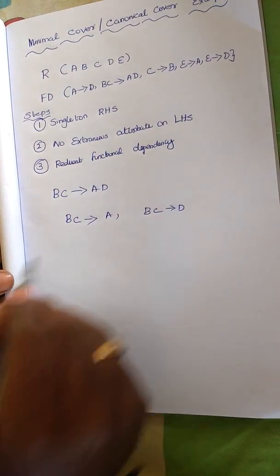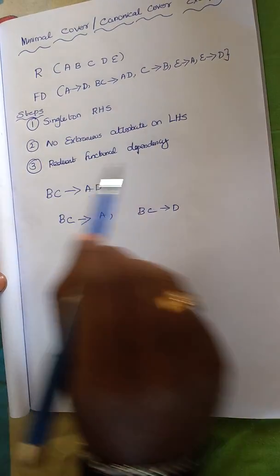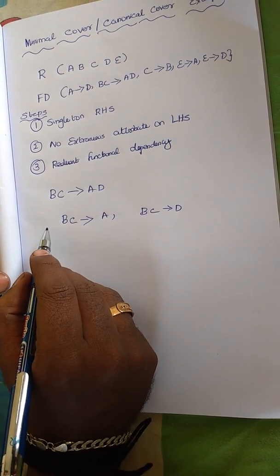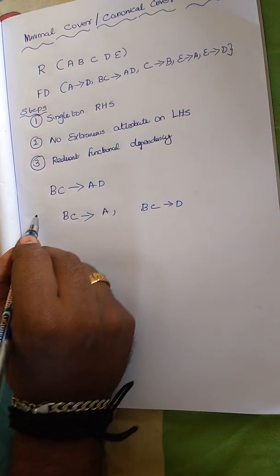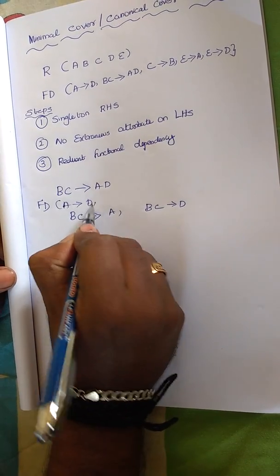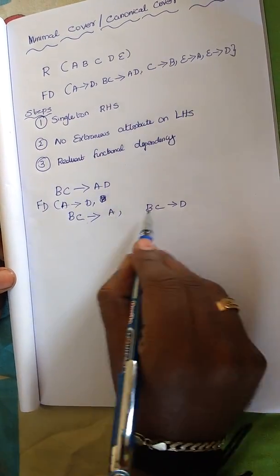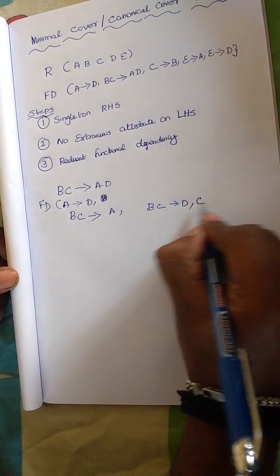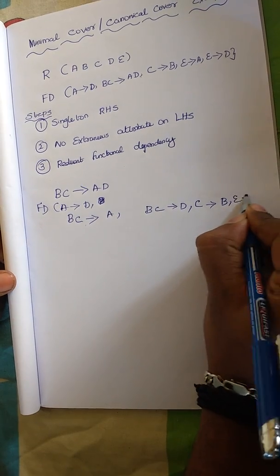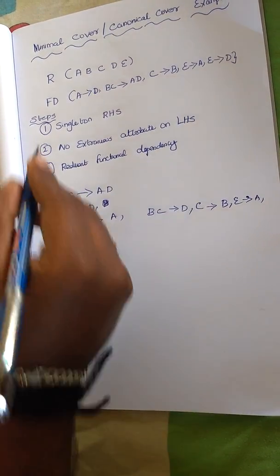After that modification, the new functional dependencies are: A determines D, BC determines A, BC determines D, C determines B, E determines A, and E determines D. So the first step is complete.